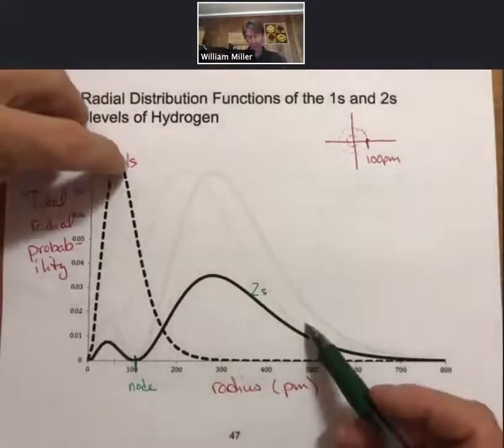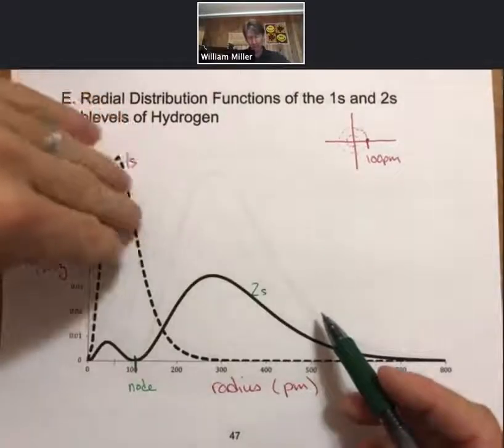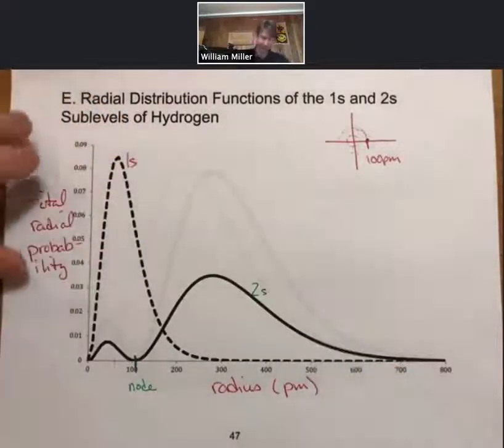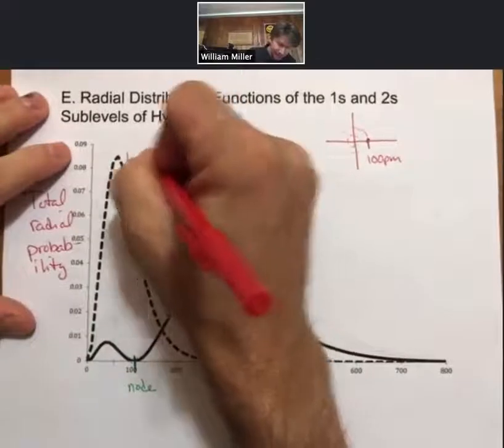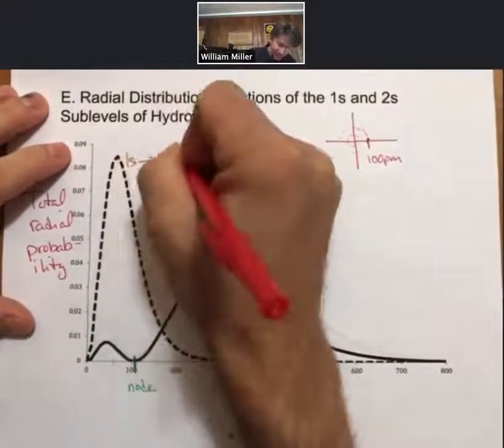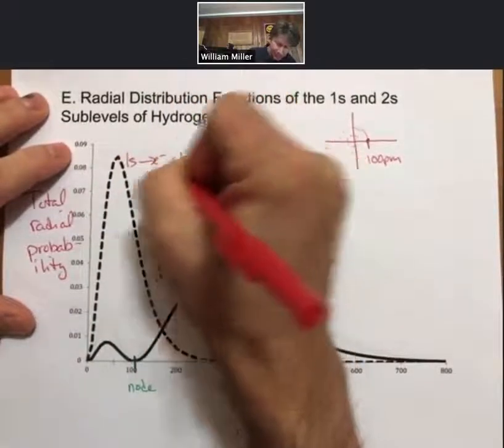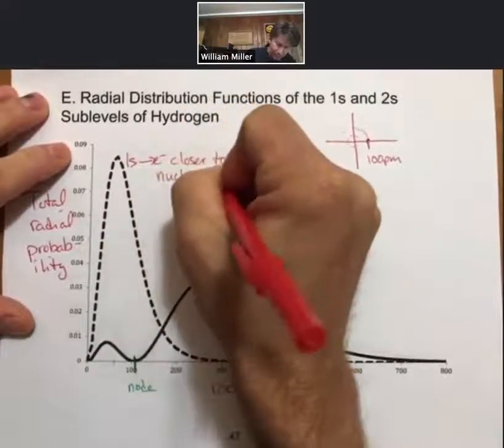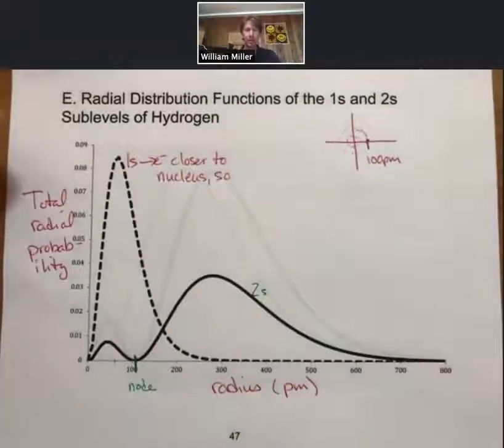Now, in general, 1s electrons are closer to the nucleus, so 1s is lower in energy than 2s.